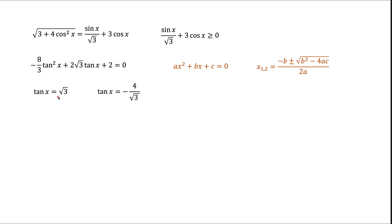One value is tangent x = √3, and the other is tangent x = −4/√3. Although sine and cosine are limited between −1 and 1, tangent has no such limitations — it ranges from −∞ to +∞. So both of these values yield certain values of x.